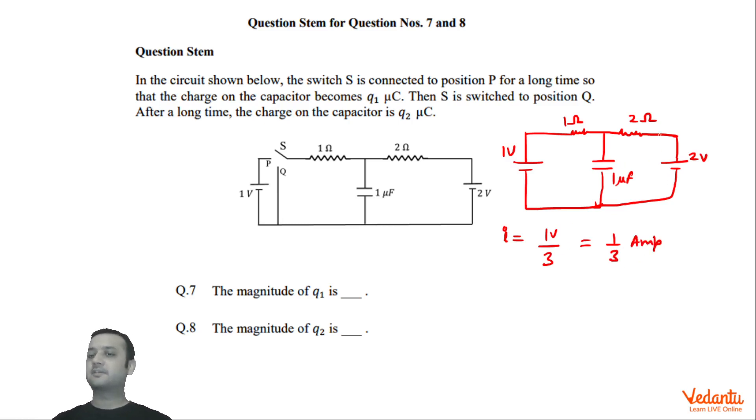Now we can find the potential difference and the current by the way will be in this direction. Now we can find the potential difference across this 1 microfarad. So if you try to start from here then 2 volts rise and 1 by 3 into 2, that means 2 by 3 volts drop. That means we can say that if this is point A and this is point B, so VA minus VB is 4 by 3. So VA minus VB becomes 4 by 3.